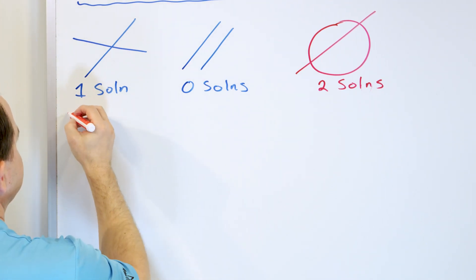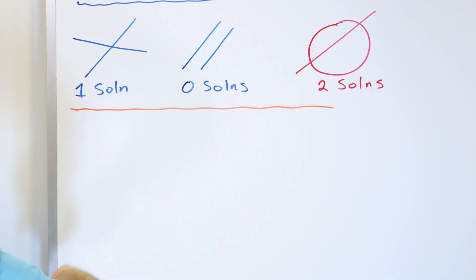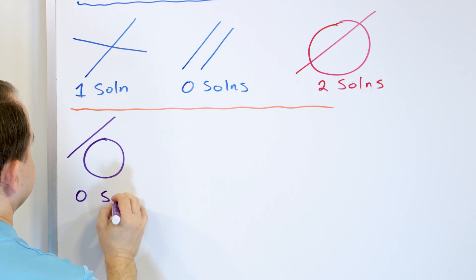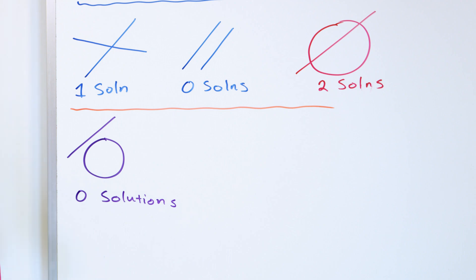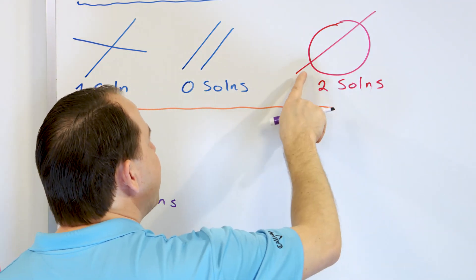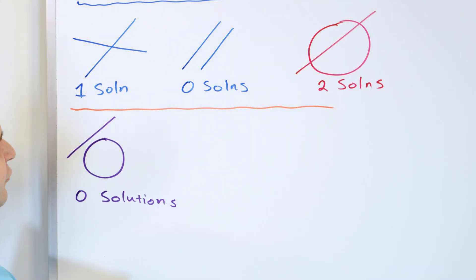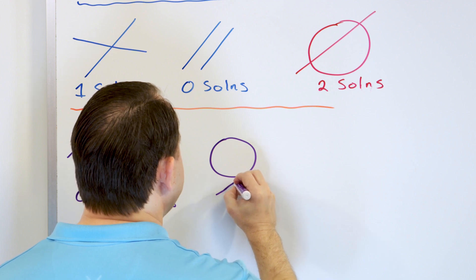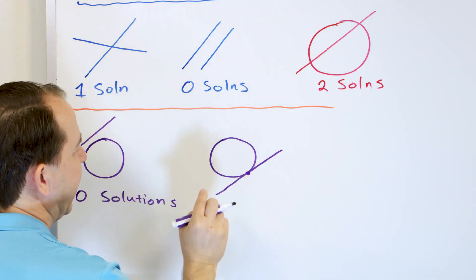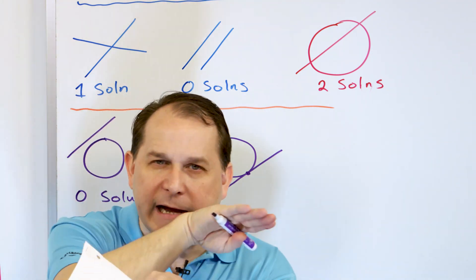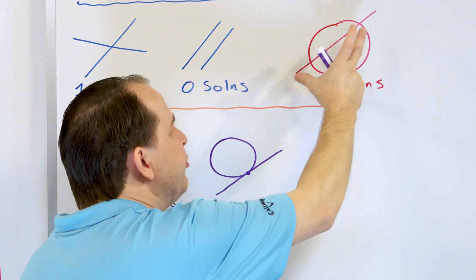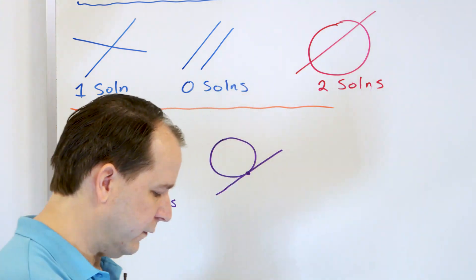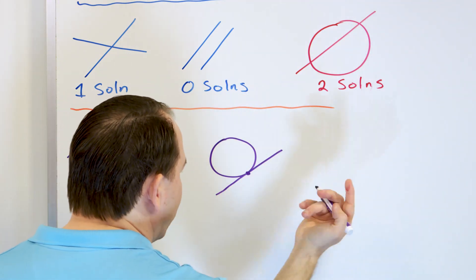However, I might also have a circle with a line that never crosses it at all — that's zero solutions. And there's a special case: a line that just grazes the circle at one exact location. I can shift the line up until it just touches the surface in one place. That's called a tangent line — a line tangent to the circle — giving only one solution.